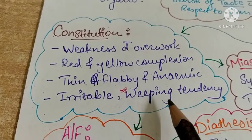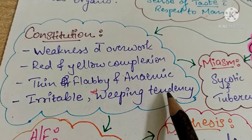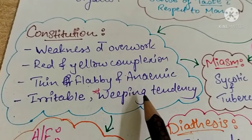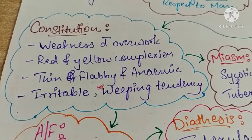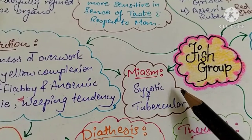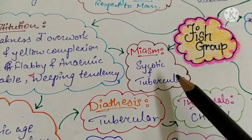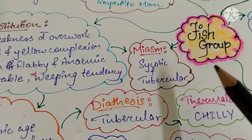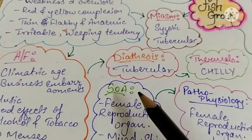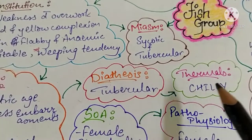Irritability is present. There is also a marked tendency to weep. The miasms in the background are psycotic and tubercular miasms. The diathesis is tubercular diathesis.